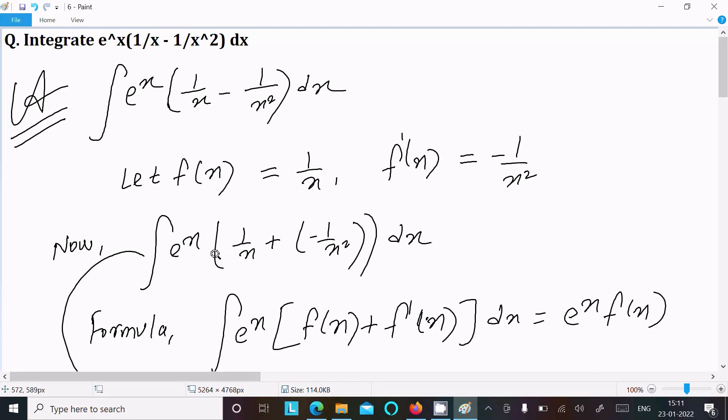Now here, e to the power x times 1 by x plus minus 1 by x squared dx. So this is here f of x, here is f dash x dx. So we have the ready-made formula that is equal to e to the power x times f of x.